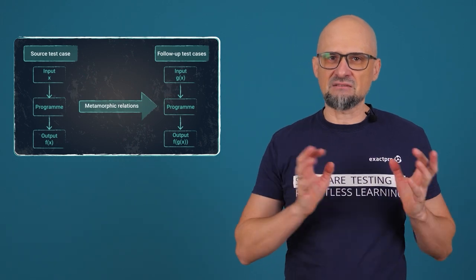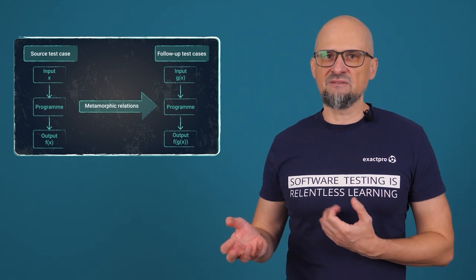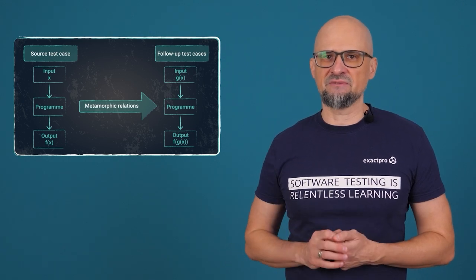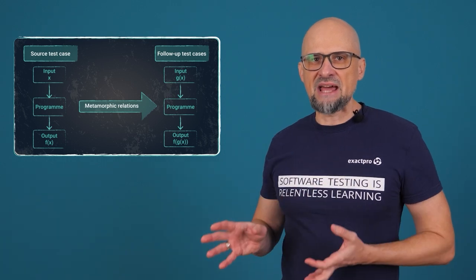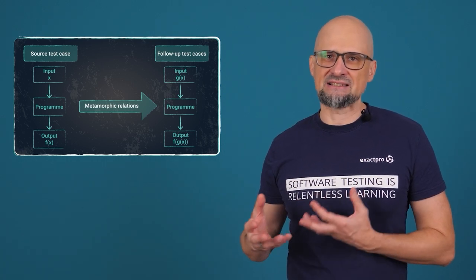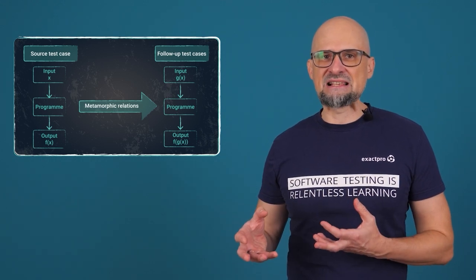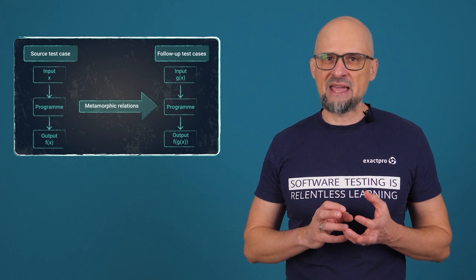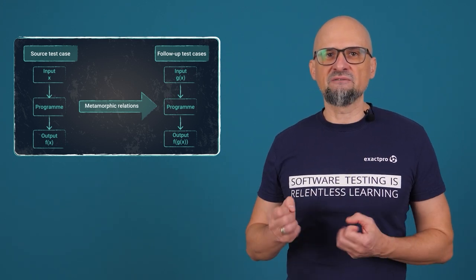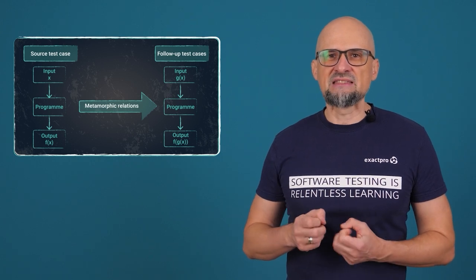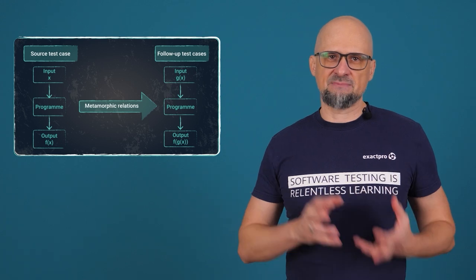Metamorphic testing is relatively new and different from traditional test techniques because the expected results of the follow-up test cases are not absolute values but relative to the expected results. It is aimed at generating test cases based on a past source test case. The idea is making one or more follow-up test cases by changing the source test case based on a metamorphic relation, which is based on the property of a required function of the test object that tells us how a change in input is reflected in the expected results.